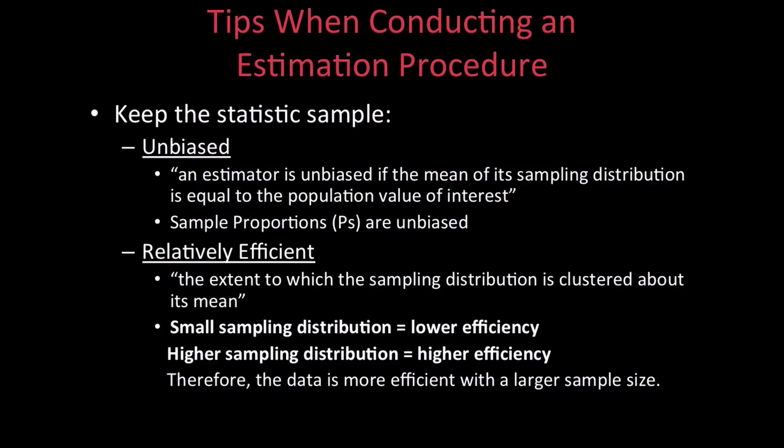Efficiency is also key in the estimating process. Efficiency is the extent to which the sampling distribution is clustered about its mean. Greater clustering will mean higher efficiency, while lower clustering will result in a lower sampling efficiency.